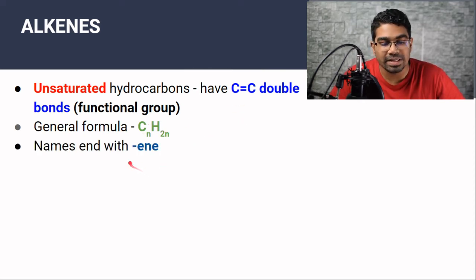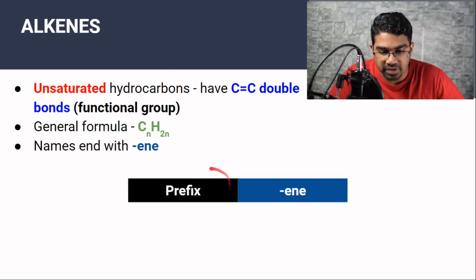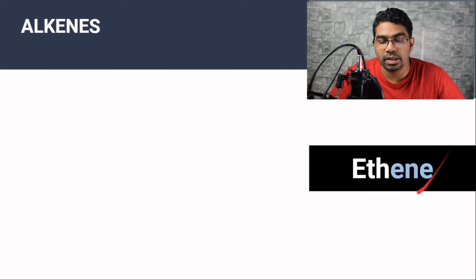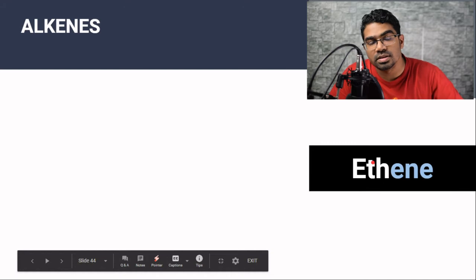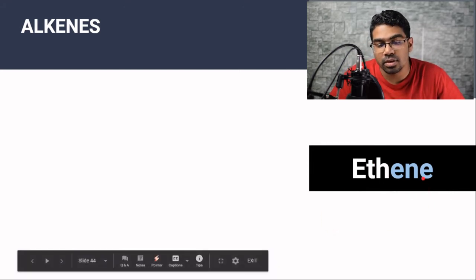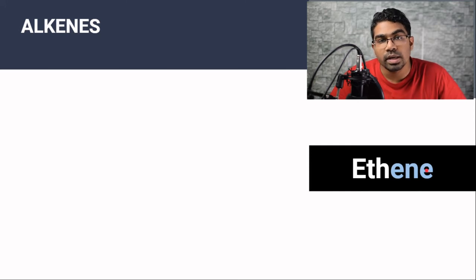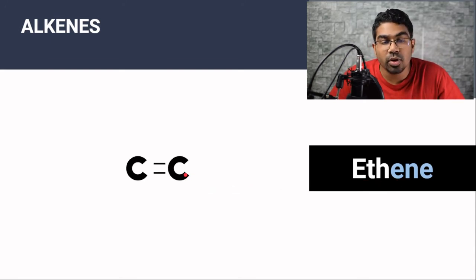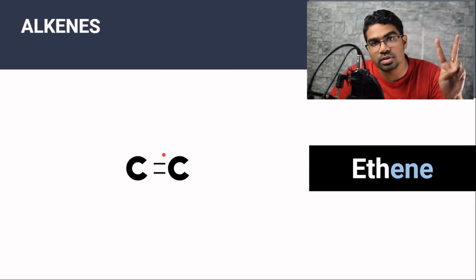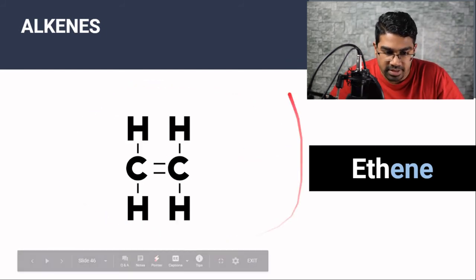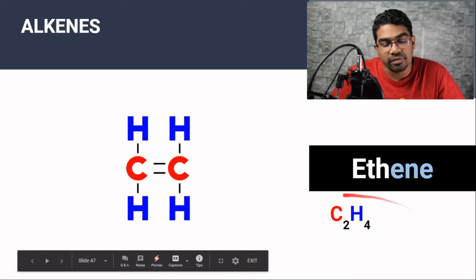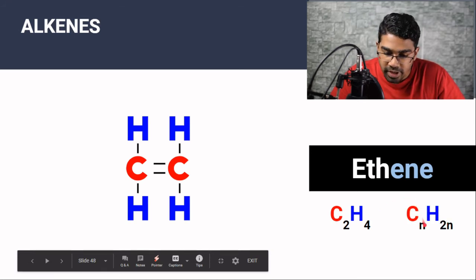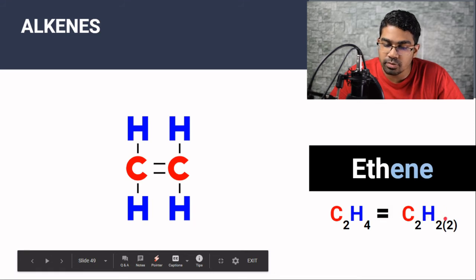All alkenes end with -ene, so their name consists of the prefix followed by -ene. Let's look at ethene. Eth is the prefix for two carbons. The smallest alkene is ethene because there cannot be a carbon-carbon double bond with only one carbon atom. We draw the two carbons with a double bond between them. Both carbons already have two bonds, so they can each form two more bonds with hydrogen atoms. The molecular formula for ethene is C2H4. Using the general formula CnH2n: if n = 2, then H = 2(2) = 4.